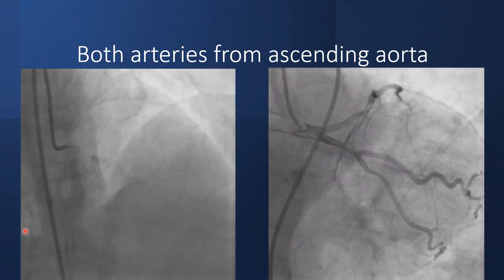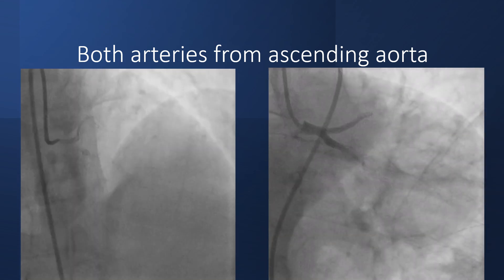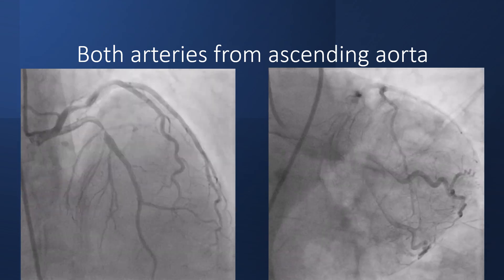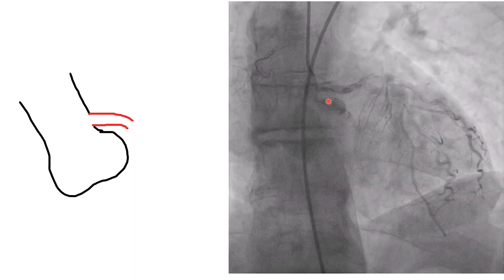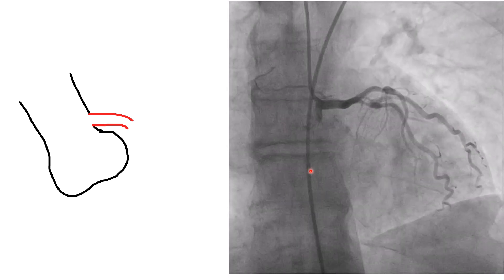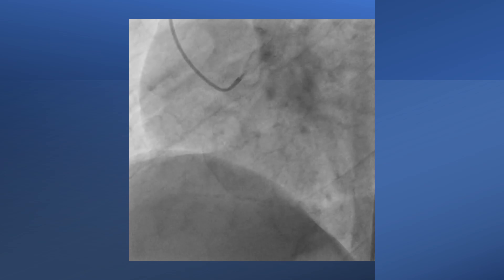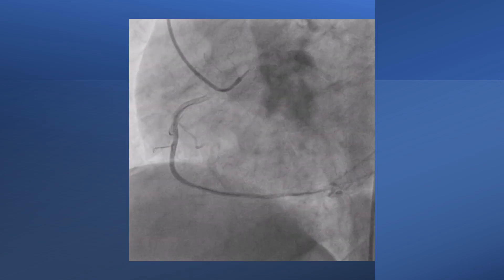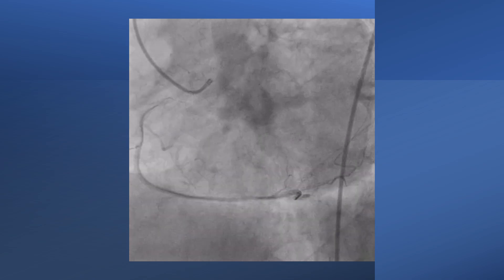In this case, both arteries arise from the ascending aorta. Initially the view looks like normal origin from the sinus of Valsalva, but this view shows the left system arising just above the sinotubular junction. The same case showed the RCA arising just above the sinotubular junction, and it was also anomalous in another sense: it was arising near the left coronary artery.